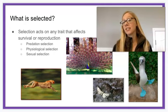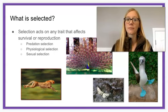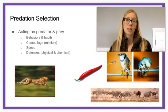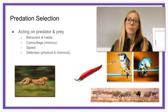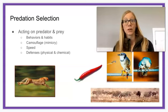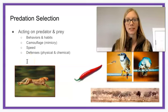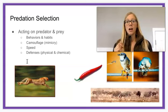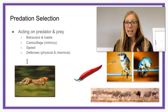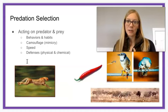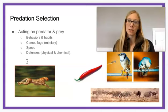Predation selection, physiological selection, or sexual selection. Let's talk about the first one, which is predation selection — maybe the most obvious — acting on a predator or prey. What are those behaviors or habits that either the predator has? Say if you're a cheetah, you can run really fast, which makes it more likely that you're going to catch your prey. Or that a prey has — maybe they're very camouflaged, they can avoid their predators, they travel in packs. What are these habits and traits that allow you to survive?